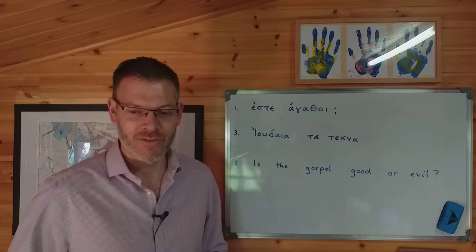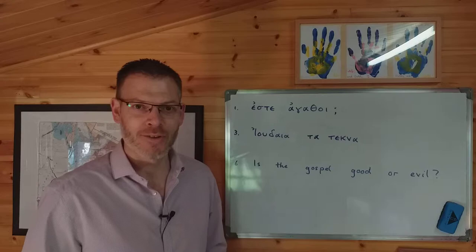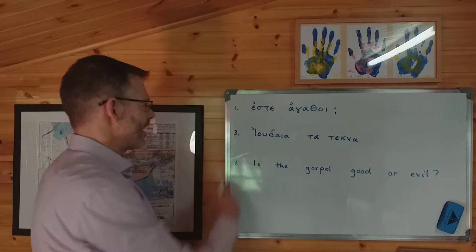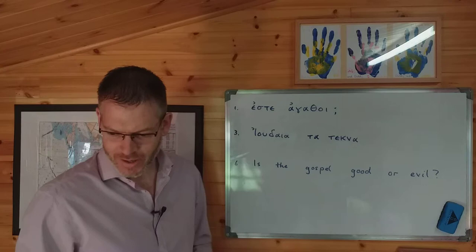So we've got two or three examples here. The answers are in the back of the book anyway, but if I just work through them with you, maybe that'll help you to see how you'd get to the answer. Okay, so let's just take a look at example number one, page 59: este agathoi.